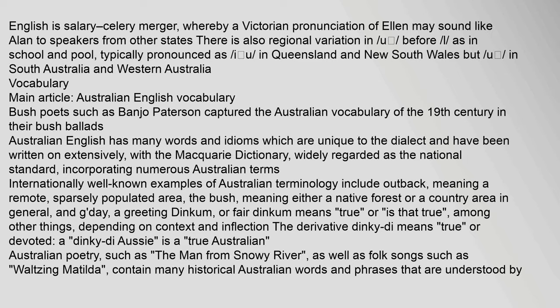Australian English has many words and idioms which are unique to the dialect, with the Macquarie Dictionary widely regarded as the national standard, incorporating numerous Australian terms. Internationally well-known examples of Australian terminology include 'outback', meaning a remote, sparsely populated area; 'the bush', meaning either a native forest or a country area in general; and 'g'day', a greeting. 'Dinkum' or 'fair dinkum' means true or 'is that true', among other things. Australian poetry, such as 'The Man from Snowy River', as well as folk songs such as 'Waltzing Matilda', contain many historical Australian words and phrases.